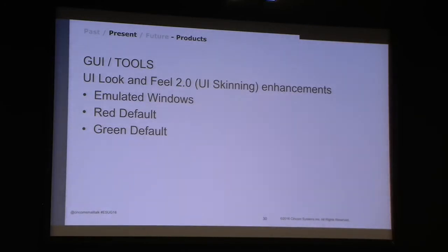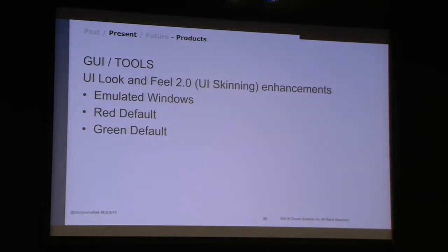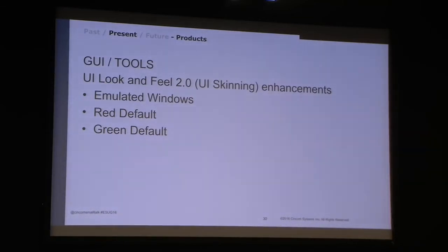For developers, you can go in — I'll show this later in the Hidden Gems talk — and change to a red background default or a green background default. Where this is really useful: say you're a developer and you have multiple images up. You can have three images up where one has an emulated Windows or native look, one is red, and one is green. The usefulness is that whenever you grab a window, you know which image it belongs to — which, if you try to do this without that, is much more difficult and takes more time.